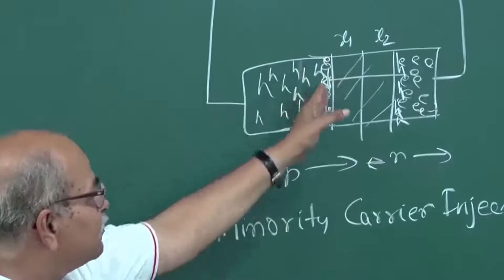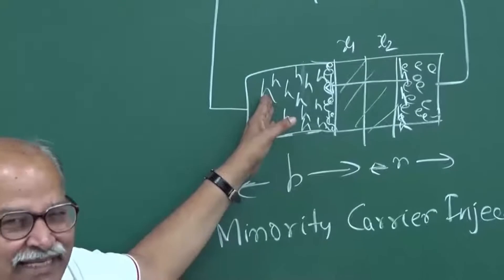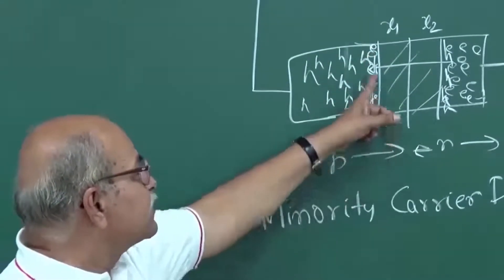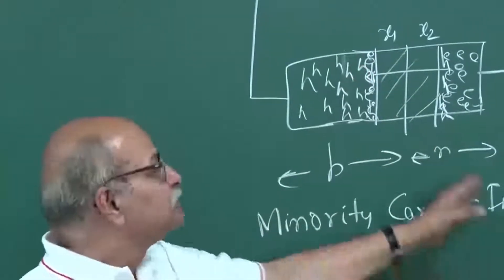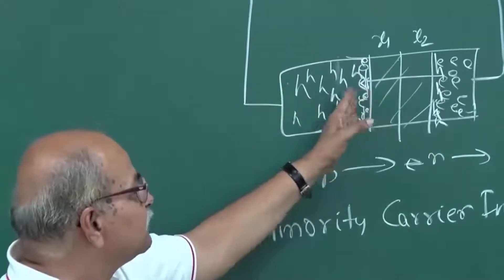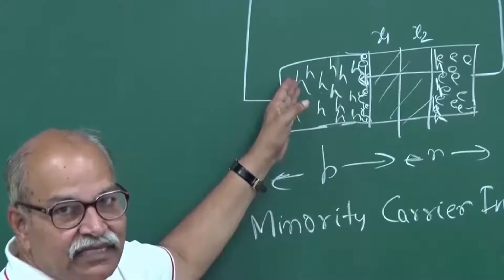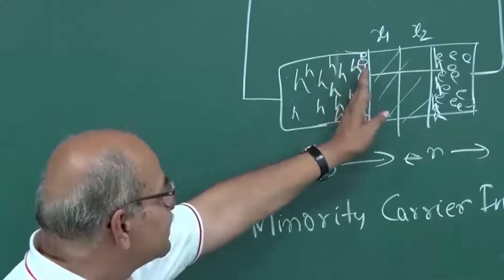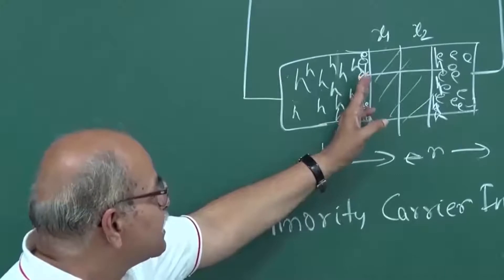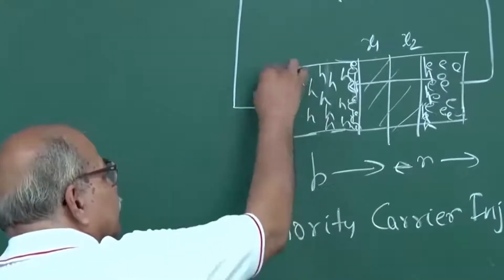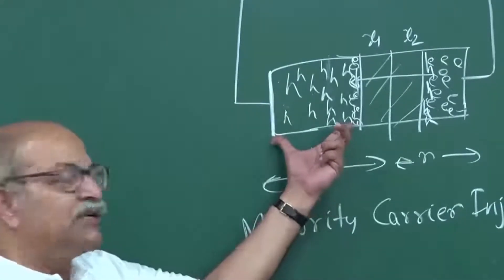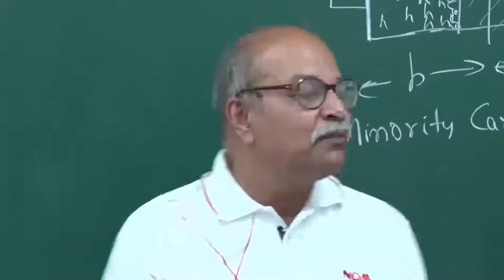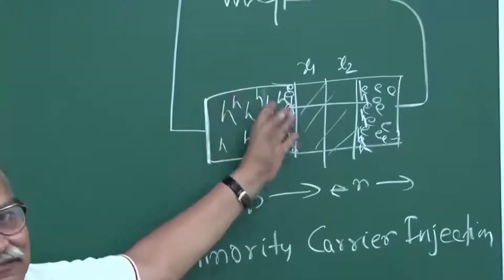For these minority carriers there is a concentration gradient. For the injected electrons, you have a large concentration at the edge of the depletion region, and as you go away from it you have very few minority carriers. So there is a concentration gradient, and therefore there will be diffusion of these minority carriers from the edge of the depletion layer toward the contact.